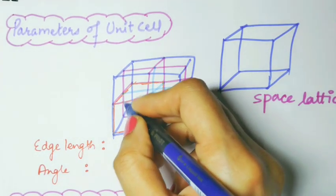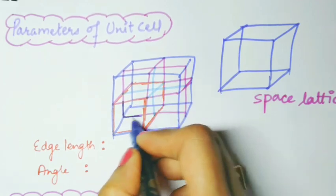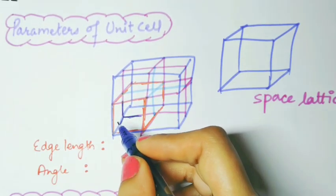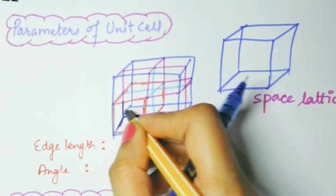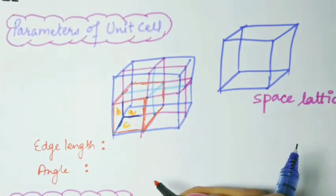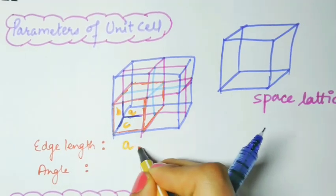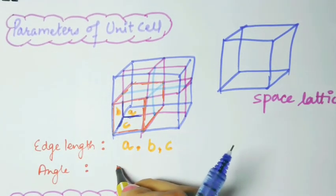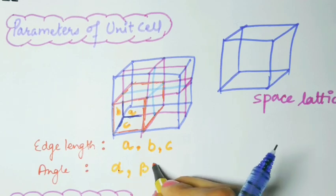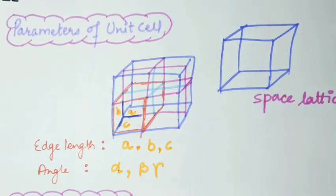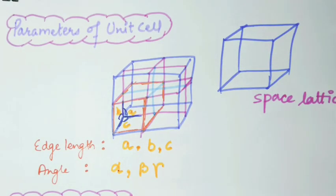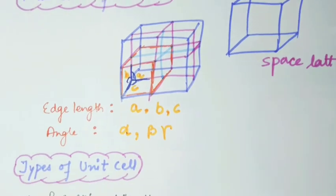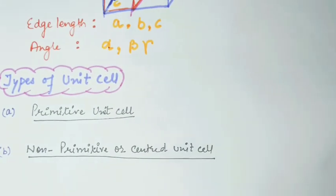This unit cell has various parameters. The unit cell has edge lengths a, b, and c, and angles alpha, beta, and gamma. These three angles — this angle, this angle, and this angle — are alpha, beta, and gamma. This is a unit cell and those are the parameters of a unit cell.